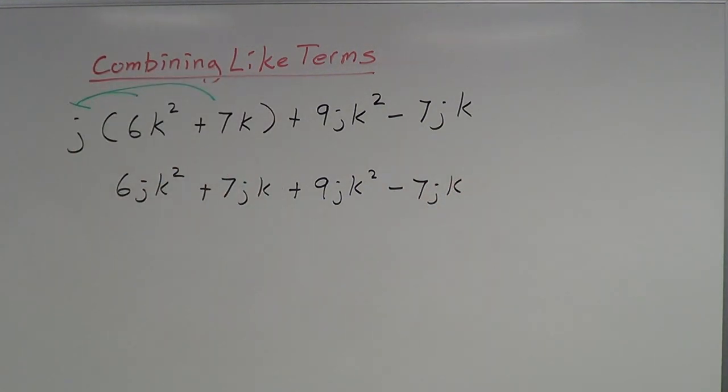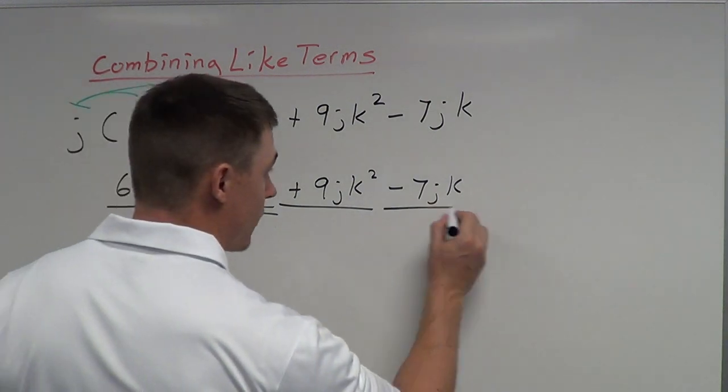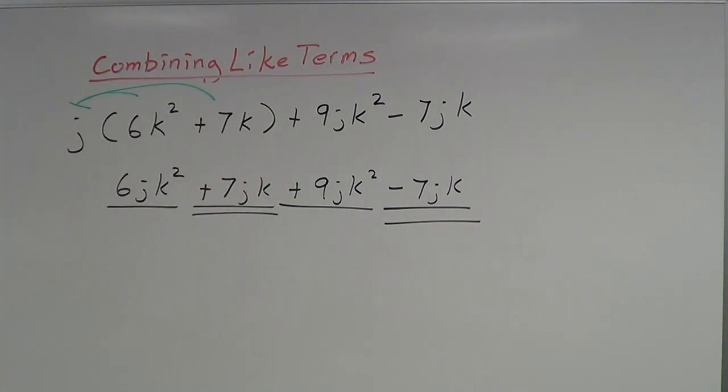So now I want to identify anything that is alike. Notice here that I have a jk². There is also a jk². And then I also have a jk term. And then over here I have another jk term. So now I've identified those terms that are alike. So now I need to add or subtract the coefficients. Let's start with the jk² terms. 6 plus 9 is 15jk². Only the coefficients change, not the variables or the exponents. That's the first one.